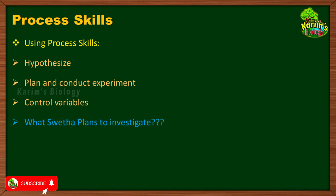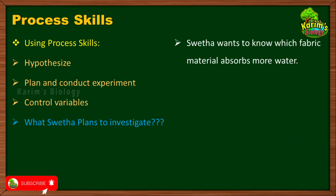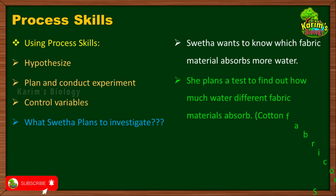The experiment is conducted by a girl named Sweta. Sweta wants to investigate which fabric material absorbs more water. This was the question in her mind — she wanted to confirm which type of fabric material absorbs more water and which fabric material absorbs less water. Let us find out how she is going to do that by following the process skills we just discussed.